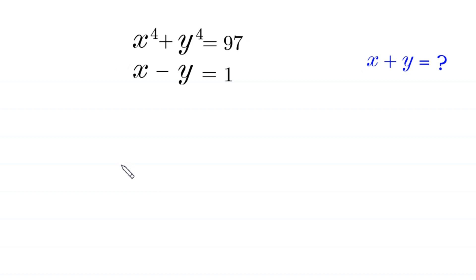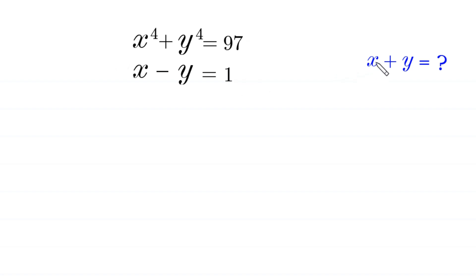Hello everyone, you are welcome to how to solve this very nice system of equations. x to the power 4 plus y to the power 4 is equal to 97, and x minus y is equal to 1. Our job is to find all possible values of x plus y.